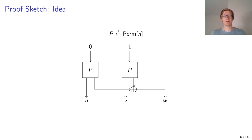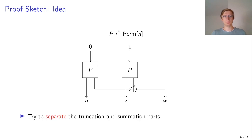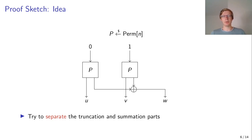Now I want to sketch a part of the proof, because I think it's a very interesting part and simplifies the construction a lot. Because we're dealing with a hybrid construction of the truncation and summation parts, it's very complicated to analyze both parts together. So what we would like to do is separate the truncation and the summation parts, and we will apply a lot of transformations to the constructions in order to achieve that.